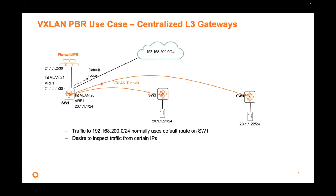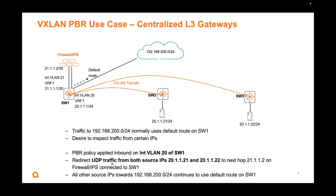Another example is centralized layer 3 gateways. Here, switch 2 and switch 3 are layer 2 VTEPs — there's no default gateway, so you cannot apply PBR because that's purely L2. The gateway is now on switch 1, centralized. You can apply the PBR policy on that SVI inbound. In this example, I just want to redirect UDP traffic from these two sources to this next hop. The next hop 1.2 is actually not on the same subnet as the VMs — this is a /20 subnet, this is a /21 subnet. So this is normal PBR; nothing to do with VXLAN or VNI. You do need to have an IP next hop that is directly connected to the switch. All other traffic will continue to use the default route — you just want to inspect UDP traffic from these two source IPs to this firewall device.